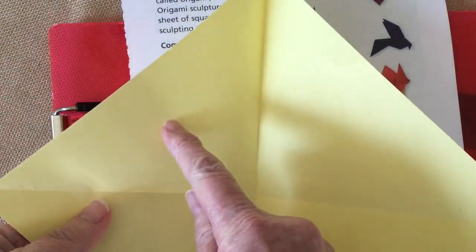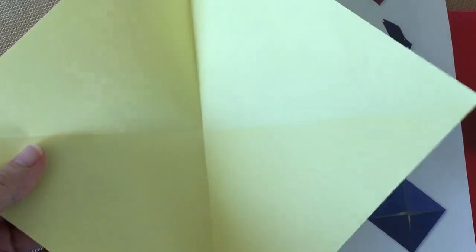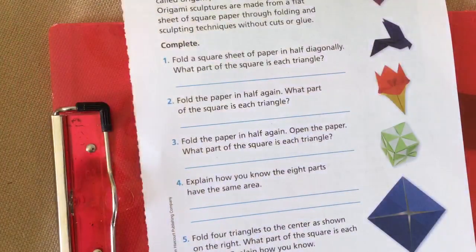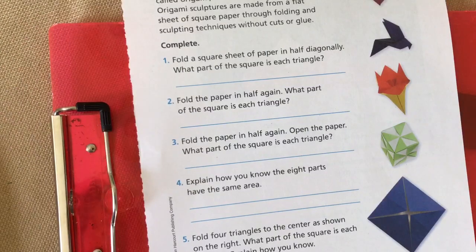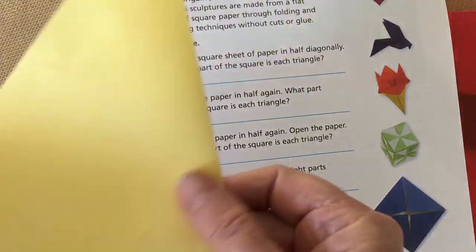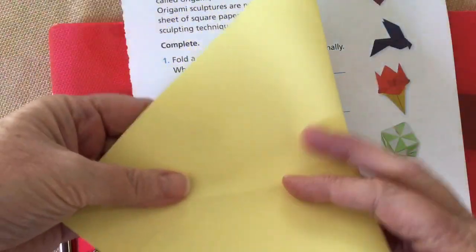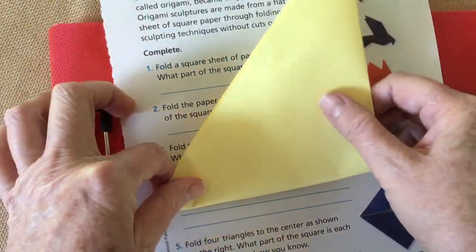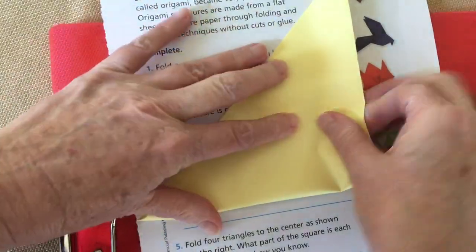So remember, when we fold things in half and then fold them in half again, it's going to give us our quarters, right? So now you will have four sections, four different sections, and each section will be one fourth.